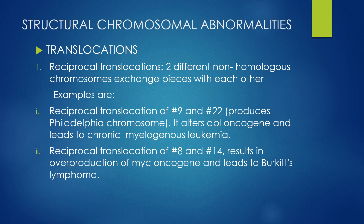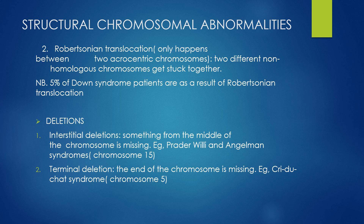Now we look at structural chromosomal abnormalities. The first example is a translocation. In a reciprocal translocation, two different non-homologous chromosomes exchange pieces with each other. A clinical example is the reciprocal translocation of chromosome 9 and chromosome 22, which gives the Philadelphia chromosome. This alters the ABL oncogene and leads to chronic myelogenous leukemia. Next is Robertsonian translocation, which happens only between two acrocentric chromosomes — two non-homologous chromosomes get stuck together. Notably, five percent of Down syndrome patients result from Robertsonian translocations.